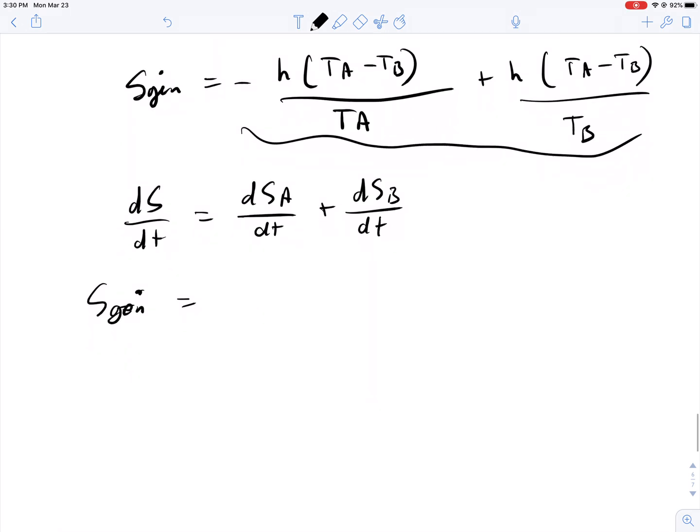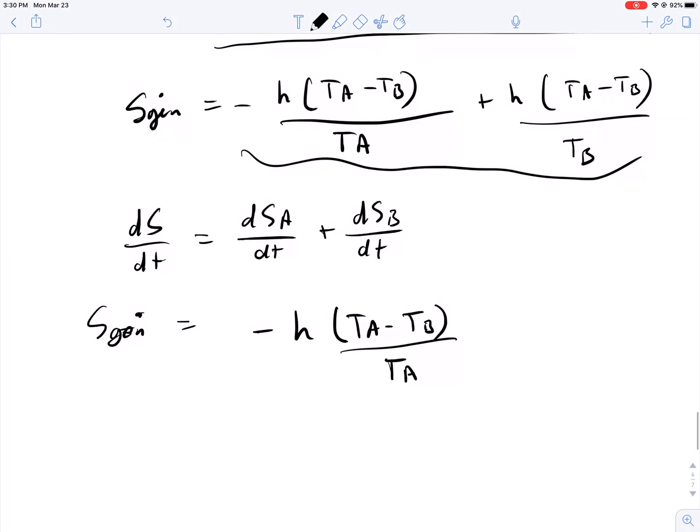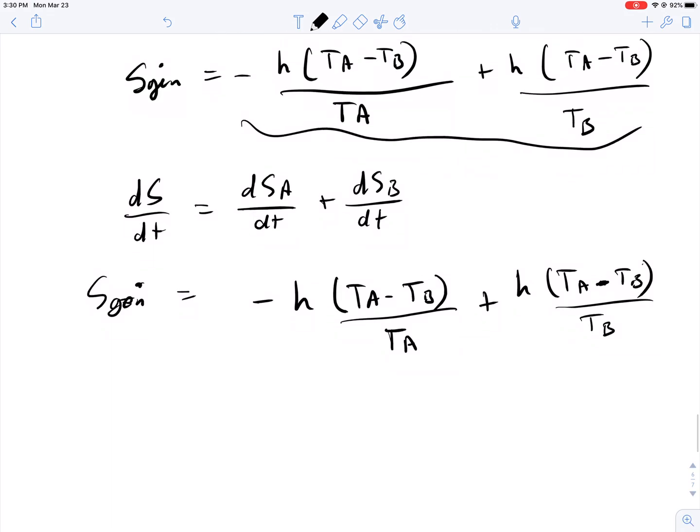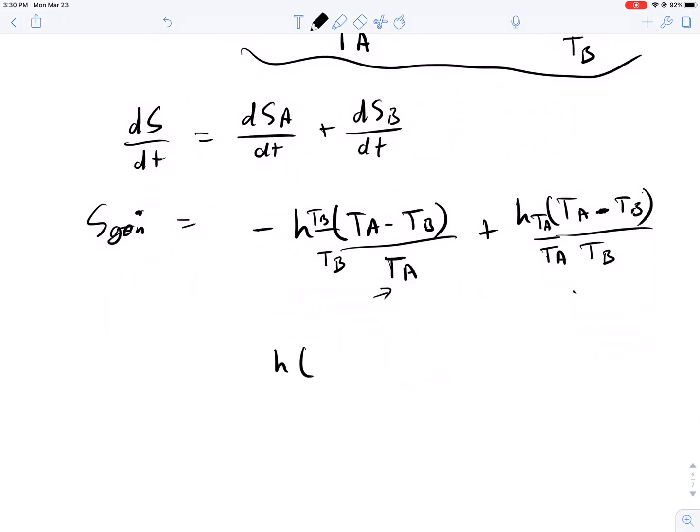So, you can then go through and combine them. How do we combine H times TA minus TB over TA, plus H times TA minus TB over TB? Well, to add fractions, you have to have the same common denominator. This side will multiply by TB over TB, and this side we will multiply by TA over TA. So, then we end up with H times TA minus TB, squared, all over TA times TB.